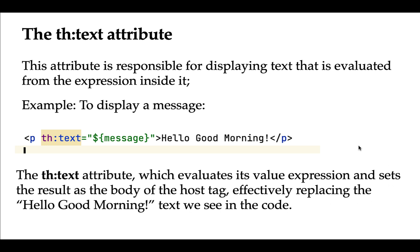The th:text attribute evaluates its value expression and sets the result as the body of the host tag, effectively replacing the 'hello good morning' text. The host tag here is nothing but the paragraph element. If there are any issues or anything goes wrong while evaluating this expression, then the th:text attribute will print that dummy data — 'hello good morning'.